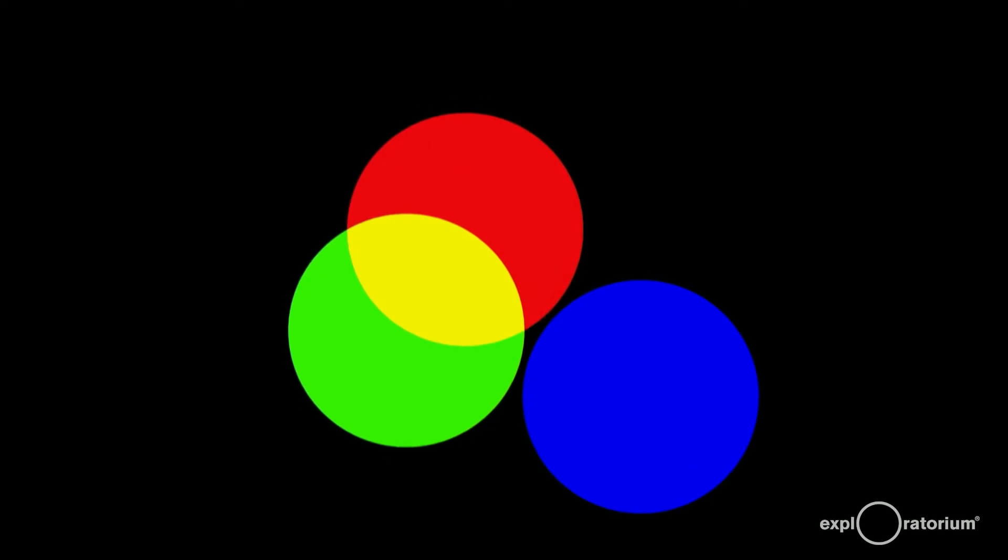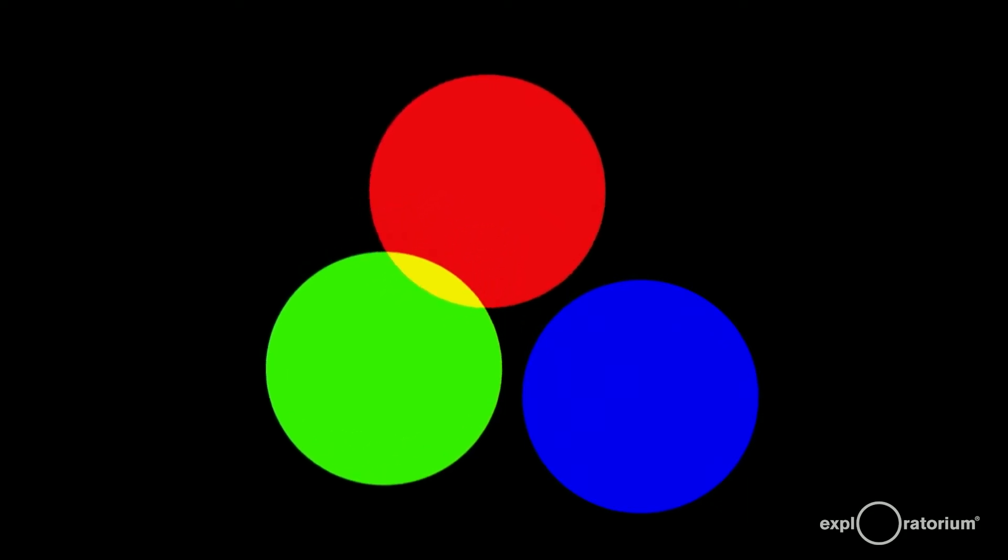The only other combination is adding red to green. Red plus green makes yellow. This may seem like a surprise to many people, but we're mixing light here, not paint. We'll get to paint in a bit.